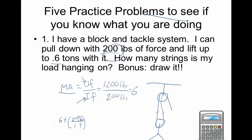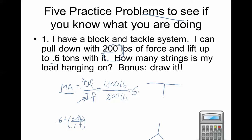Because the mechanical advantage of a pulley system equals the number of strings it's hanging on, that tells me it has to be hanging on six strings. Drawing this out, we would need one, two, three fixed pulleys and one, two, three movable pulleys. The string connects at the load, going under a movable, over a fixed, under a movable, over a fixed, under a movable, and over a fixed.